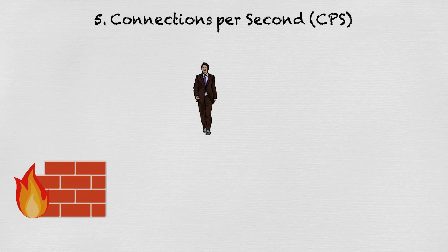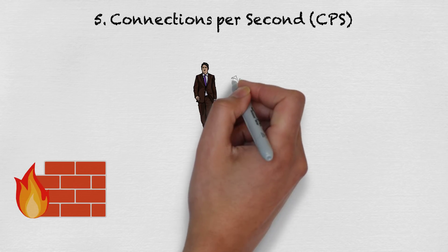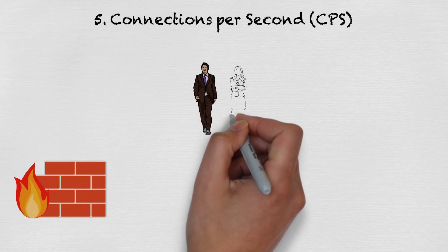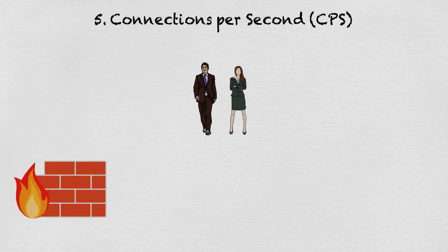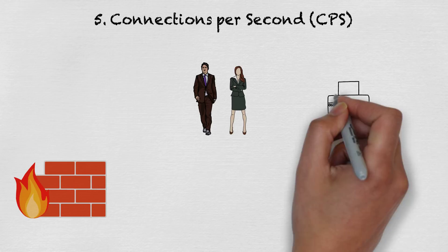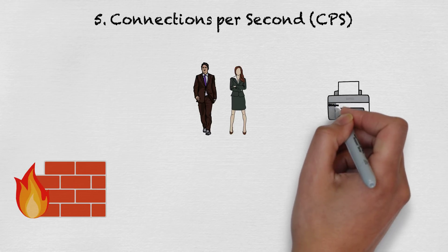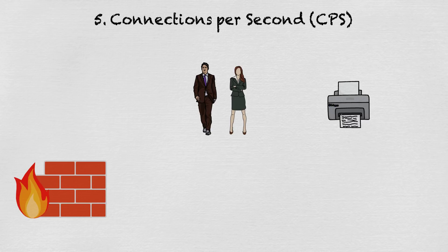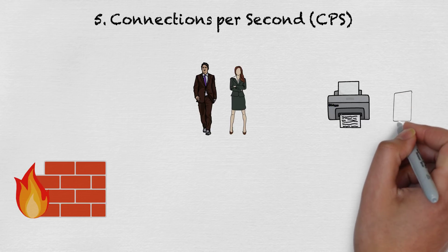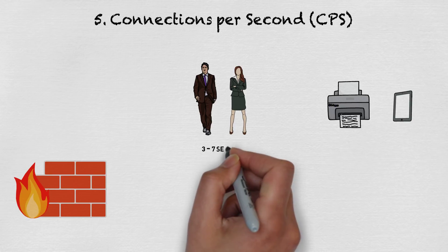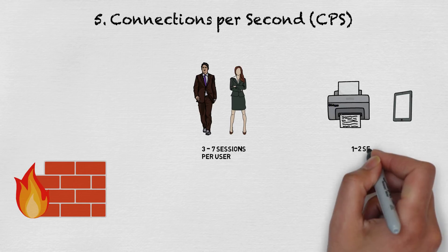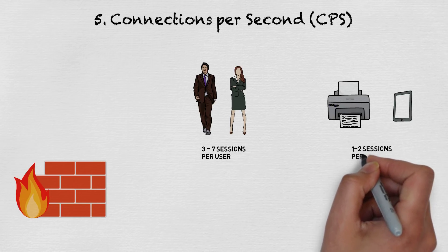The easiest place to determine your requirement would be from your current firewall if you have one in place. If you don't, or you can't get that number, here's a little technique. First, count the total number of users on your network. Next, get the total number of devices without users — this could be IoT devices, servers, printers, phones, and any other network device without users. Assume each user will use between three to seven sessions per second, and each device will use closer to one to two connections per second.